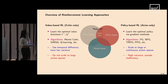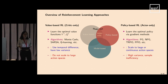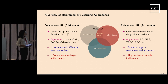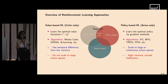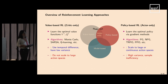Policy-based methods come to the rescue by scaling to large and potentially continuous action spaces. However, the downside is that they often suffer from very high variance when estimating the gradient of the objective, and this can hurt sample efficiency.